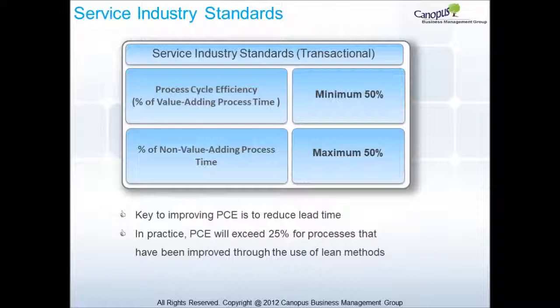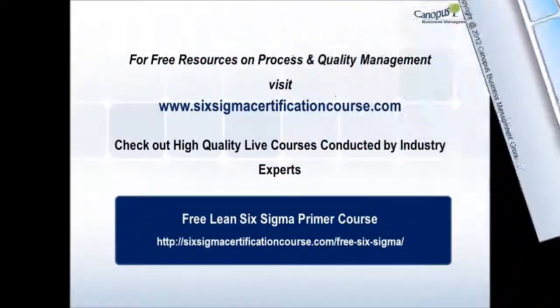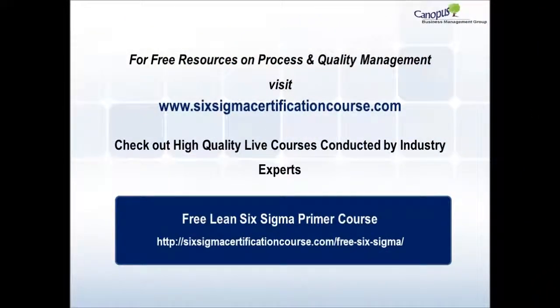The key to improving process cycle efficiency is to reduce lead time. In practice, PCE will exceed 25% for processes that have been improved through the use of lean methods. Here is a table of the global benchmarks for process cycle efficiency. Please review and move forward.